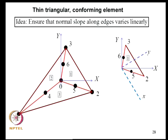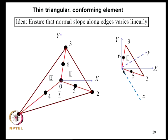Since the thin triangular element formulated earlier was non-conforming, we seek a thin triangular conforming element. The approach is to ensure that the normal slope along the edges varies linearly, which addresses the continuity problem. We consider a triangular element 1–2–3, introduce an interior node at the centroid (node 0), and construct three sub-elements. A local coordinate system is defined for each sub-element, with the X-axis parallel to edge 2–3 so the Y-axis is normal to edge 2–3.